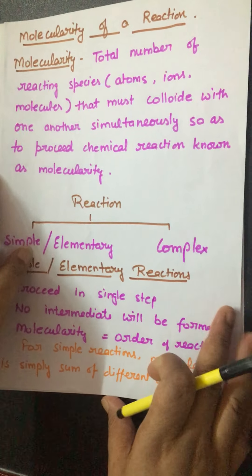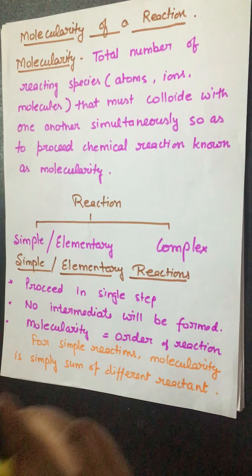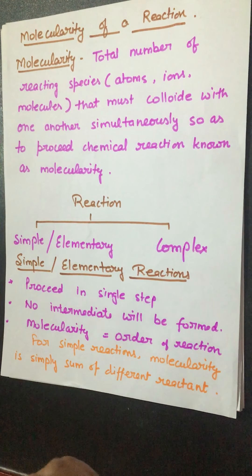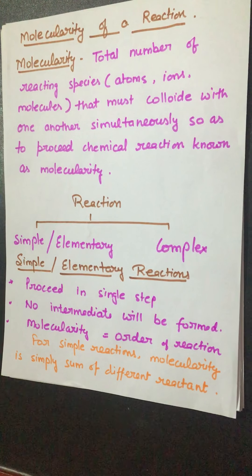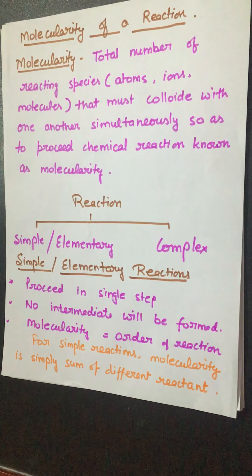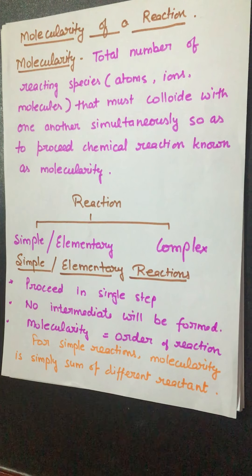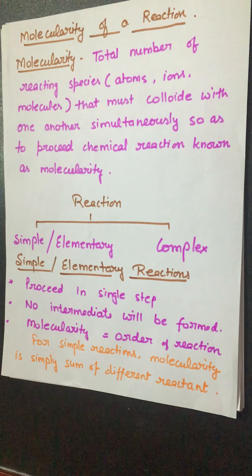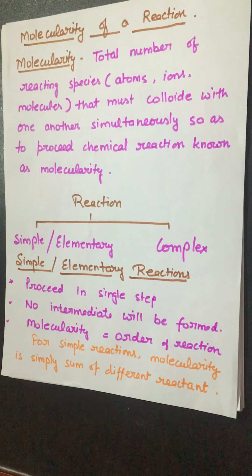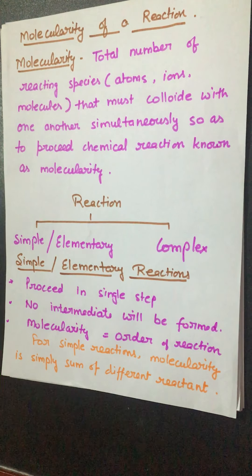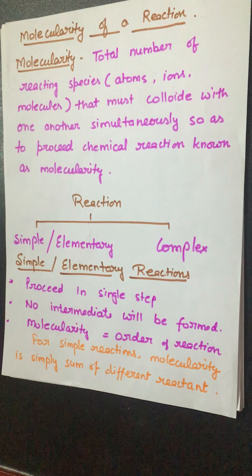Simple reactions — as the name suggests — are all those reactions which complete in a single step. Since they complete in a single step, no intermediate will be formed; only a transition state will be formed. Since the reaction takes place in a single step, the total number of molecules that collide at one time — the molecularity — will be the total number of molecules which take part in the simple type of reaction. Also, in case of simple reactions, order of reaction is the same as the molecularity.